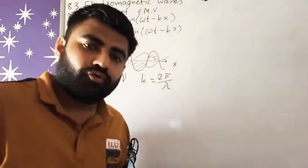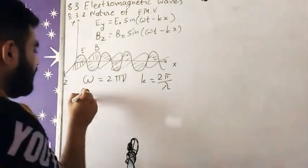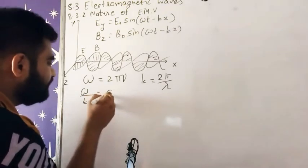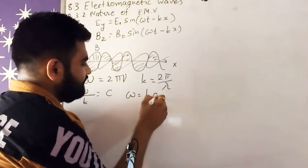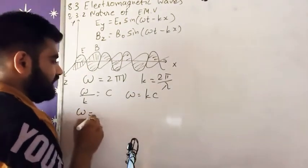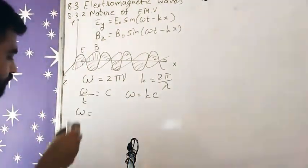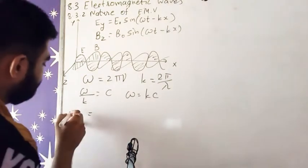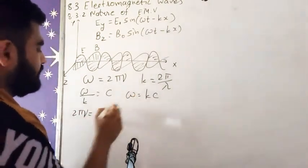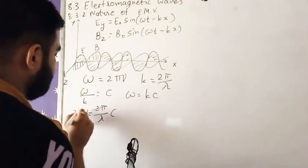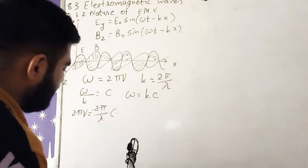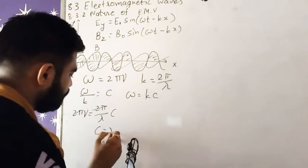Here we know that ω/k is nothing but speed of light. So here ω = k × c. And now putting all the values, ω here is 2πν, so I have to write 2πν = k. K is 2π/λ × c. 2π will be cancelled out. So now we are left with c = νλ.